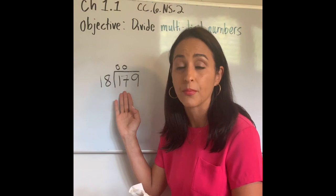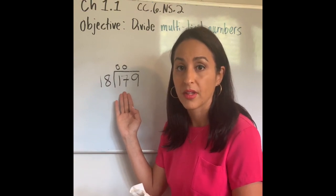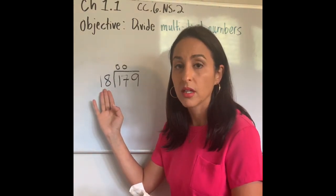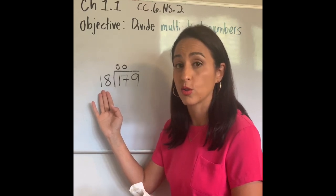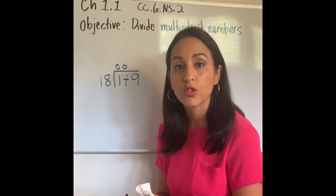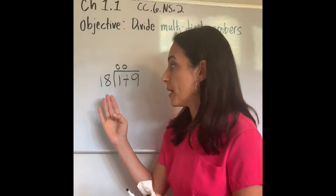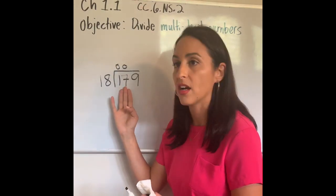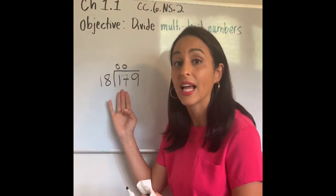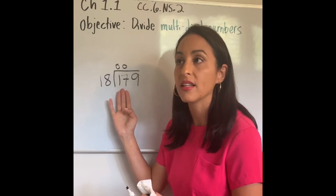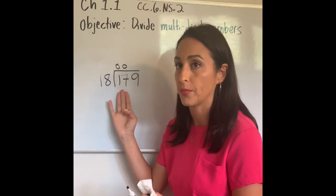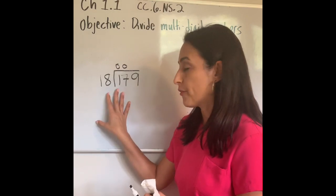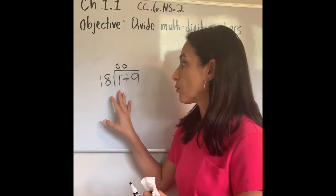This is what estimation comes into place. You have to think, what number can I round 18 to? Well, is 18 closer to 10 or is it closer to 20? Well, it's closer to 20. So I'm going to actually think in my mind that this might be close to 20. Now I'm going to look over to my divisor and think, 179, what number is 179 close to? 179 is so close to 180.